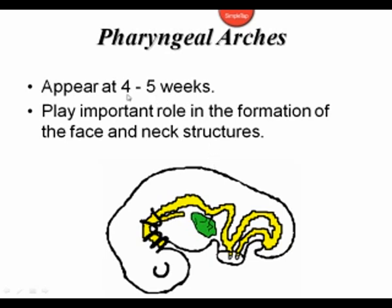They appear at about four to five weeks of gestation, about six to seven weeks LMP, and they're going to go on to form the different components of the head and neck. In this little cartoon, looking at a sagittal section of the embryo, we simply want to show the developing brain and head, and point out that as we look at the foregut — the beginning of the foregut — we see the location of where the pharyngeal arches will appear.